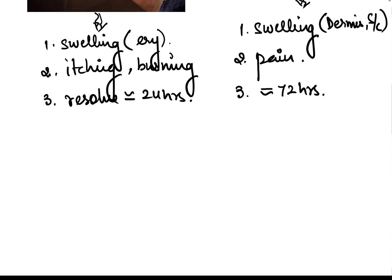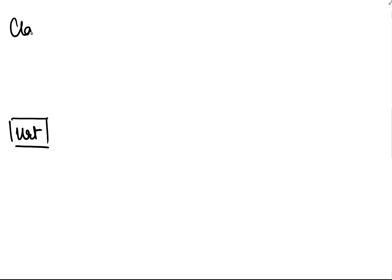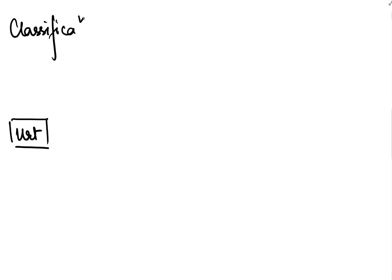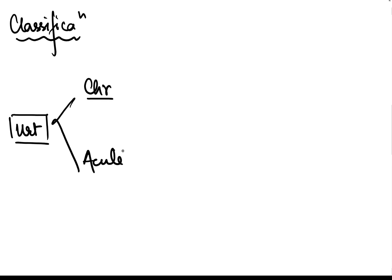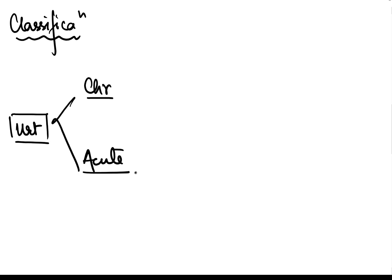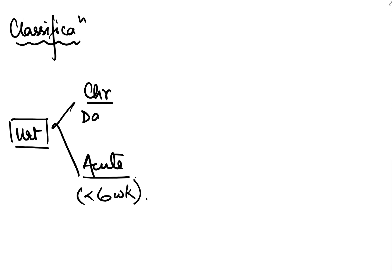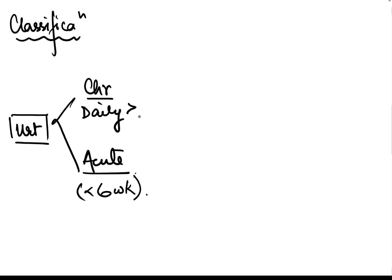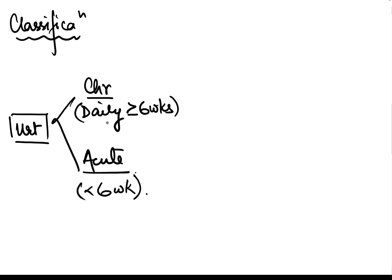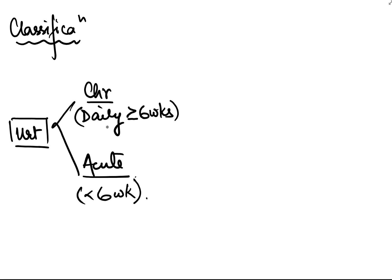Various patients suffer from urticaria and there is a classification for it. Urticaria can be classified into either chronic or acute. Acute urticaria is when episodes are of short duration, that is less than 6 weeks. If it is occurring daily for more than or equal to 6 weeks, then it is chronic urticaria.